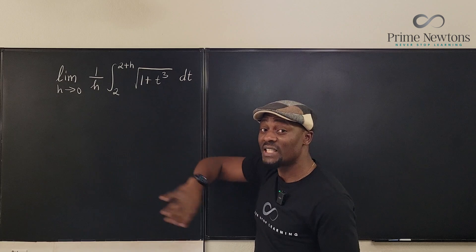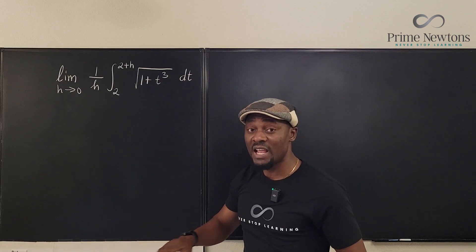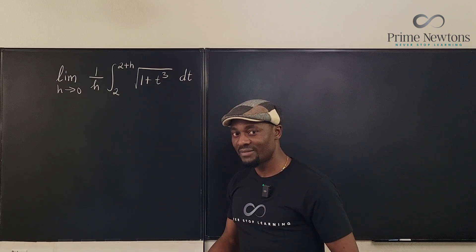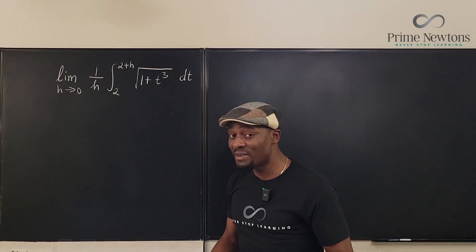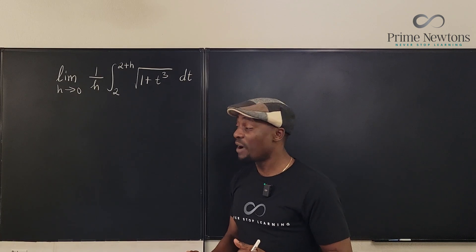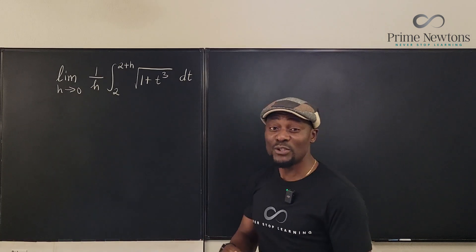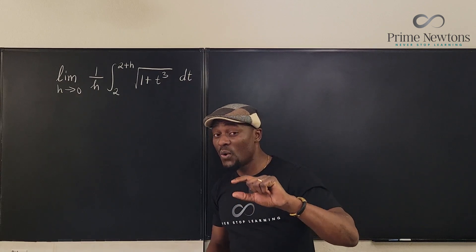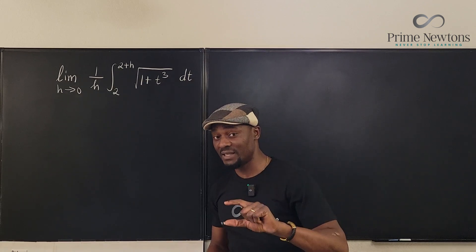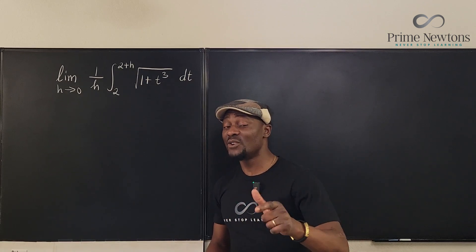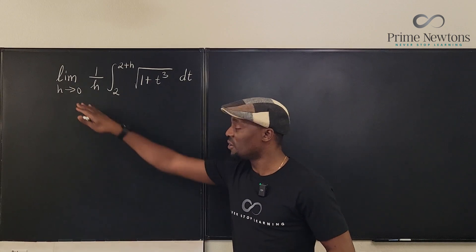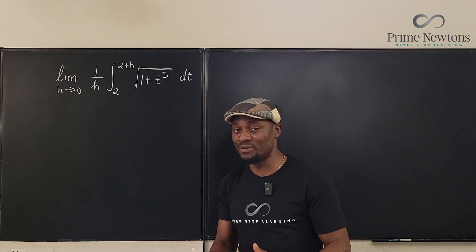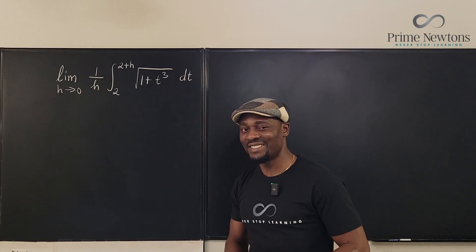Infinity times zero is indeterminate, and therefore you cannot compute the limit. Whenever you have infinity times zero, you have to find a way to write it as zero over zero, or infinity over infinity. Then you can employ L'Hôpital's rule. That's exactly what we're going to do.